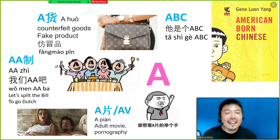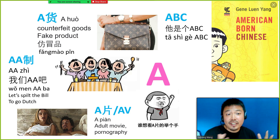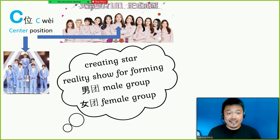Next one will be ABC. ABC represents American-born Chinese. But nowadays the meaning is more general — not limited to the United States, but also means Chinese Canadians, Chinese Australians, and so on.